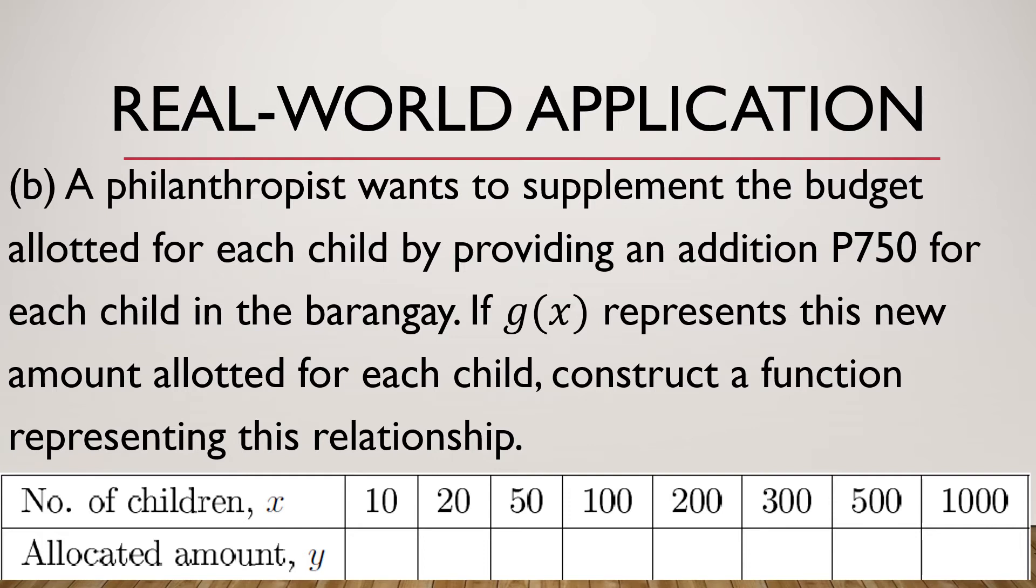In other words, we will have G(x) as 100,000 over x. Since the amount allotted for them will have an additional 750, we're just going to add 750 to F(x). So that will be the G(x).